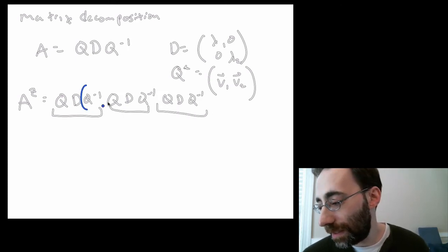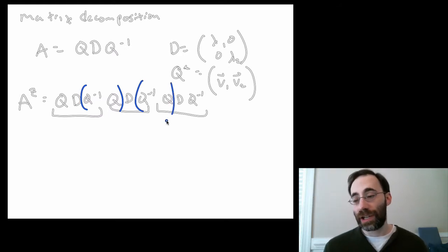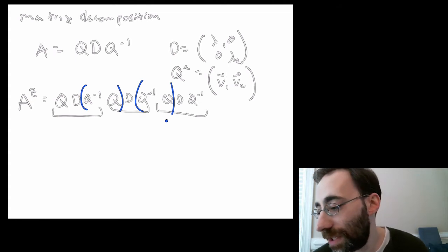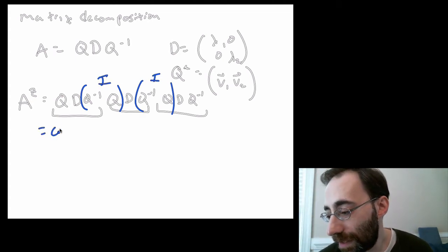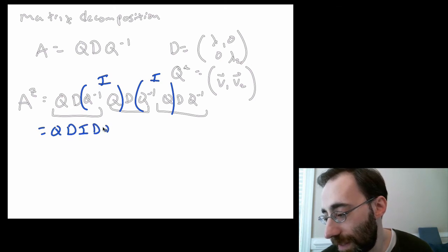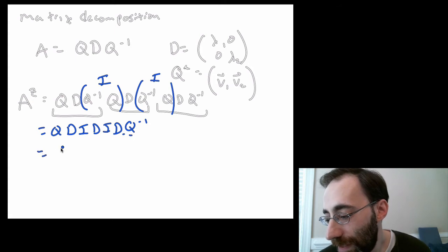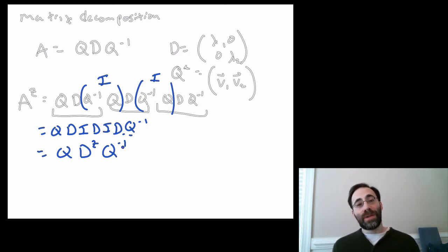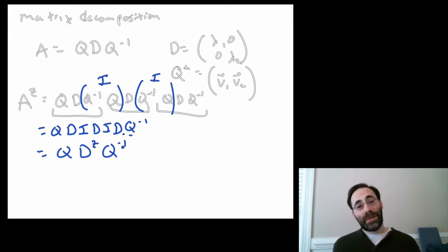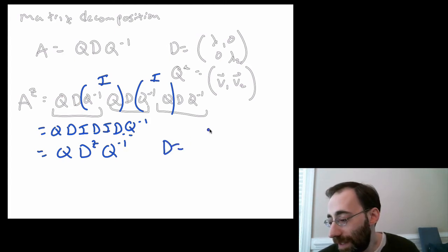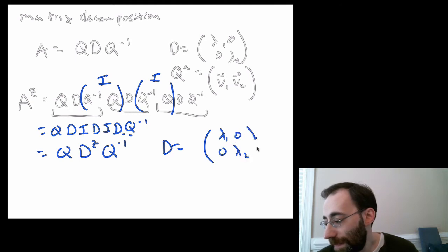Note that each Q-inverse times Q in the middle is just the identity matrix. So A^Z ends up being Q, D, I, D, I... which equals Q D^Z Q-inverse. We can make use of this to compute powers more easily instead of multiplying A by A Z times. We can find the eigenvalues and eigenvectors and multiply D Z times. That's easier because if D is a diagonal matrix of eigenvalues, the Z-th power is obtained by just taking the Z-th power of each of the diagonal elements.